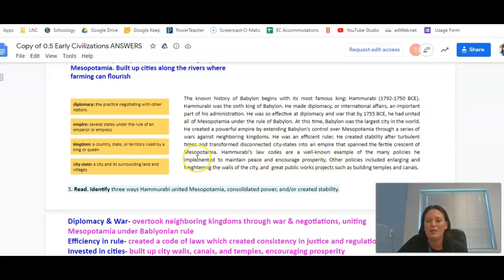Also, some examples of how he was able to consolidate or create stability within his empire was that he was implementing policies that were maintaining peace and he was trying to encourage prosperity. He also was creating some boundaries or protection for them by heightening the walls of the city, and then they were able to work on public works such as building temples and canals.